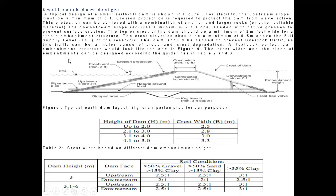A textbook perfect dam embankment structure would follow these guidelines. The crest width and slope of the embankment can be designed according to the following table. For dam height up to 2 m: crest width 2.5 m. Height 2.1–3 m: crest width 2.8 m. Height 3.1–4 m: crest width 3.0 m. Height 4.1–5 m: crest width 3.3 m. For dams up to 3 m height, upstream and downstream slopes depend on soil conditions — for sand and clay, 2.5:1 upstream and 2:1 downstream.